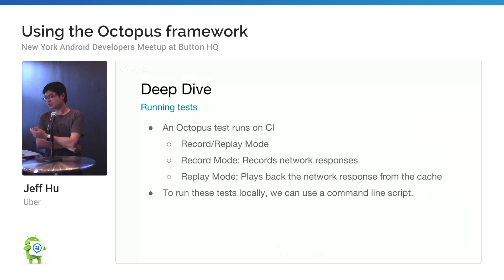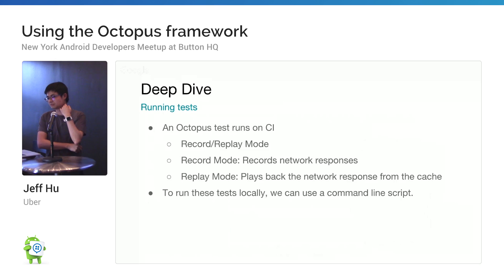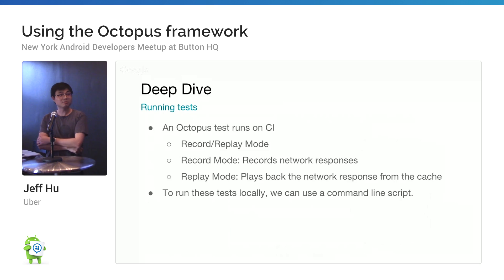For Octopus tests, first thing is we run the tests on CI. You are able to run tests on a nightly build or every master build, so you can trigger an Octopus test. In order to make tests a little bit more stable, you have to have a good signal to make all the requests and receive them. We also provide a record and replay mode — record mode records the network responses the first time you run it, and replay mode retrieves those network responses from the cache. You can also run tests locally using a Python command line.